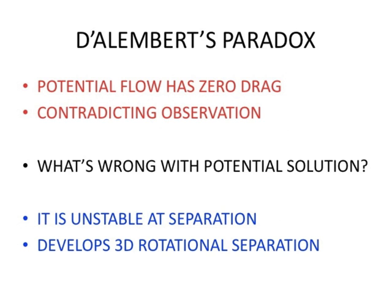The Euler equations were formulated in 1752, and the same year d'Alembert discovered that potential flow around a bluff body has zero drag, in direct contradiction with observation, which d'Alembert formulated as a paradox, discrediting theoretical fluid mechanics from the start.